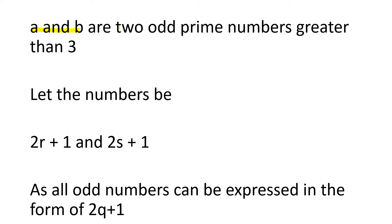Let the numbers be 2R plus 1 and 2S plus 1, as all odd numbers can be expressed in the form of 2Q plus 1. We are just changing the variables over here to make it a bit simpler.